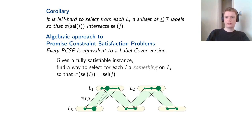The 'something' could be many different things. For example, it could be subsets — similar to the corollary above, except the constraint requires that what you select for i, after applying π, exactly equals what you select for j. Another important example is distributions on L_i, giving a version of label cover solvable in polynomial time by linear programming.